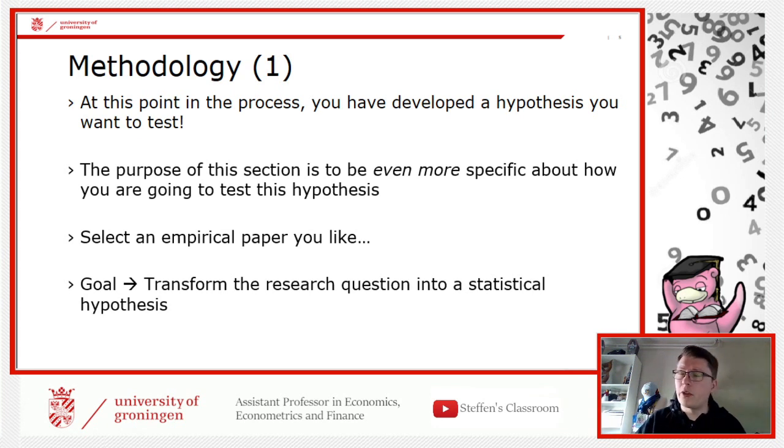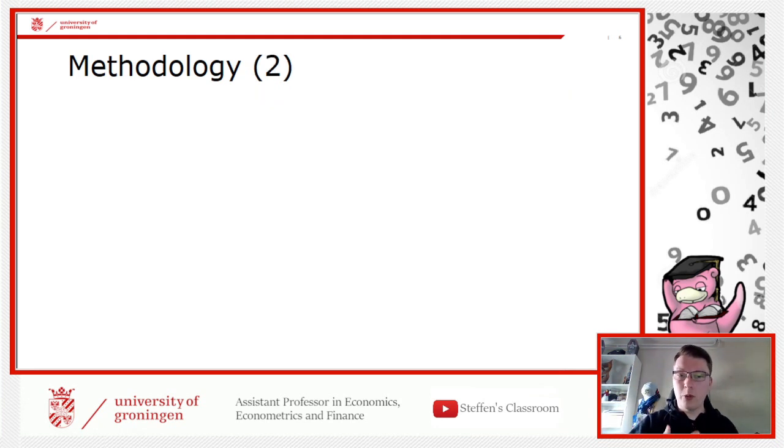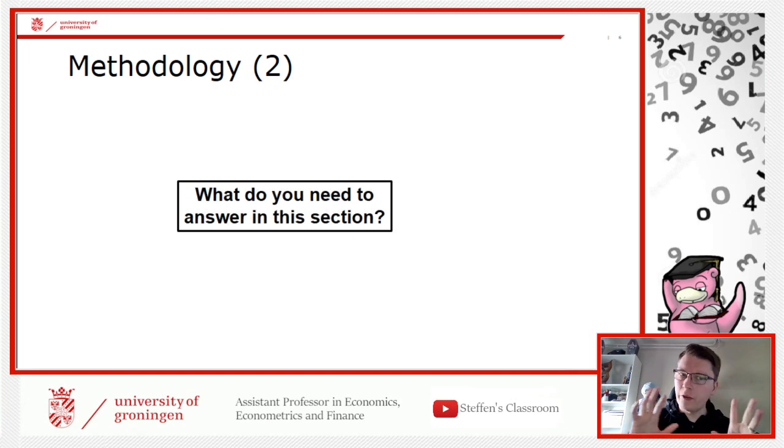What is your goal here? You have developed a hypothesis based on your literature review, and now you're transforming that into a statistical hypothesis you want to test, so you can present as a null and alternative hypothesis, and you can then apply your data in order to test this. That's what you're trying to do.